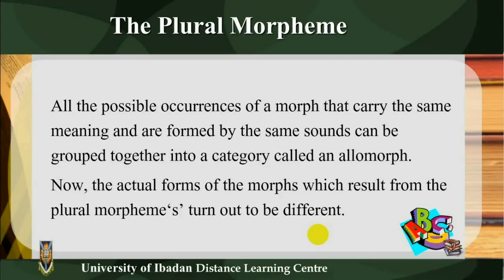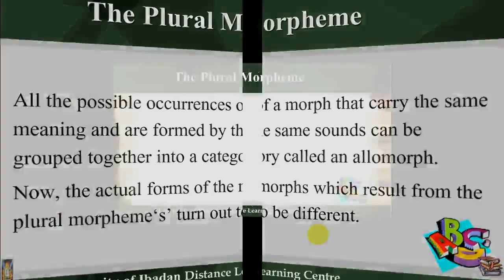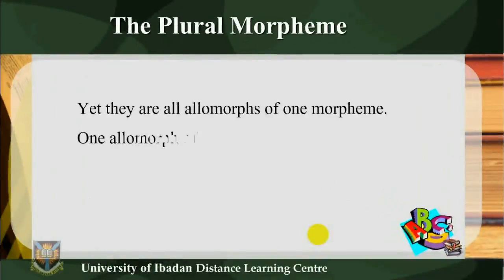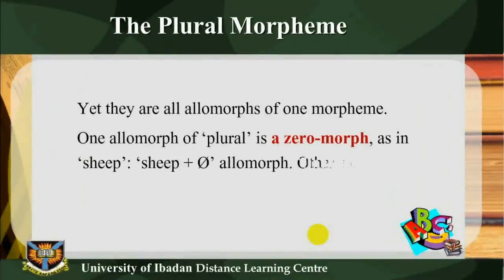The actual forms of the morphs which result from the plural morpheme turn out to be different. Yet they are all allomorphs of one morpheme. One allomorph of plural is a zeromorph.